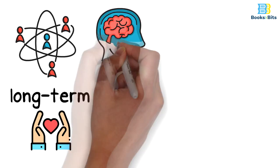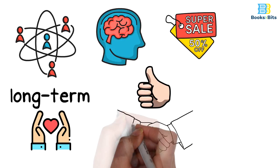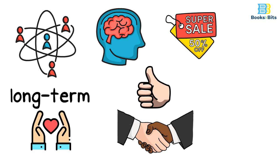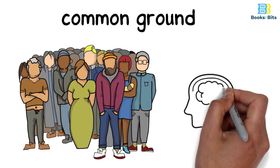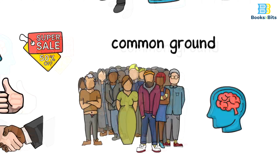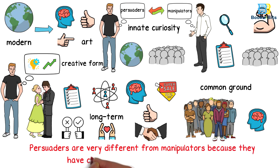This gives us the impression that persuasion is not only about selling, but also about getting approval and support. Because it seeks primarily to create or find a common ground that satisfies all the sides of the persuasion. Bit to remember, persuaders are very different from manipulators because they have characteristics that distinguish them.